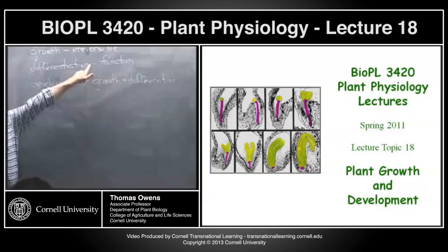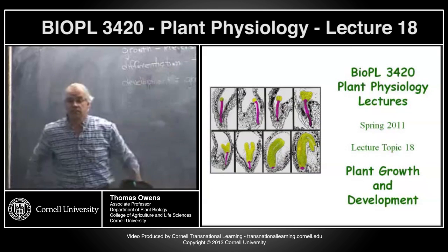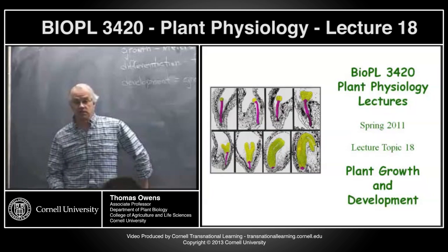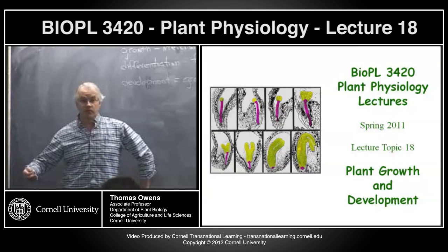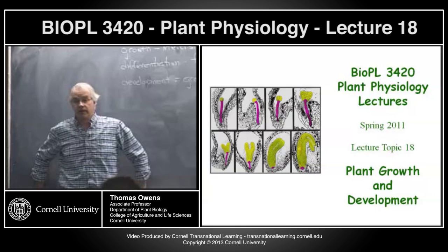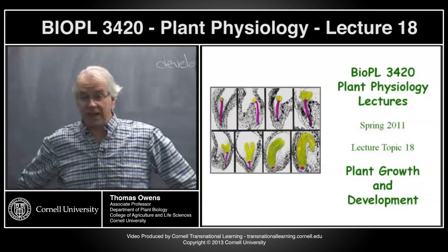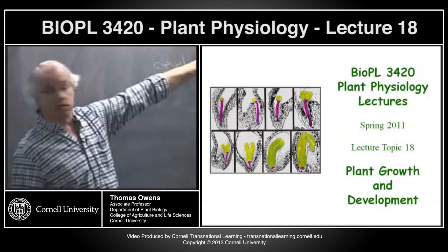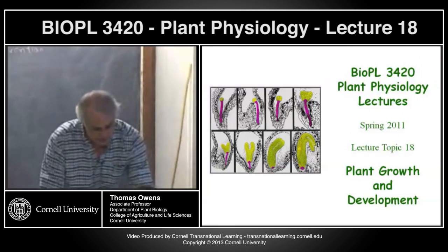We said that growth is irreversible, but differentiation is not. We've already seen some examples of this, where cells that are mature — for example, pericycle and cortical cells in roots — start to divide in response to signals from rhizobia in the soil. So these cells that were mature and had stopped dividing start dividing again to make new tissues for rhizobia to live in. In lateral root formation, cortical and pericycle cells that stopped dividing can start dividing again, making new meristematic cells to produce a new root. So although growth is irreversible, differentiation under the right conditions can be reversible.